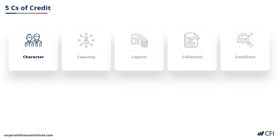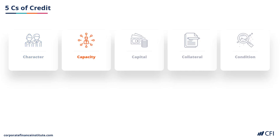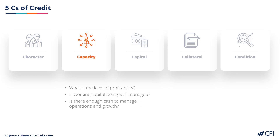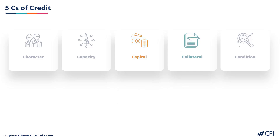Let's examine Character first. When we look at the character of a business, we ask: who is the company, what is its reputation, and where does management want to take the business? Now let's look at Capacity — what is the level of profitability, how is working capital being managed, and is there enough cash to manage growth and operations? In terms of Capital, we ask what is the financial structure of the business, does it have sufficient equity, and is it able to raise additional equity if required? In terms of Collateral, we look at what security the company has to offer, where that security will be held, and what is the most appropriate type of security to take.